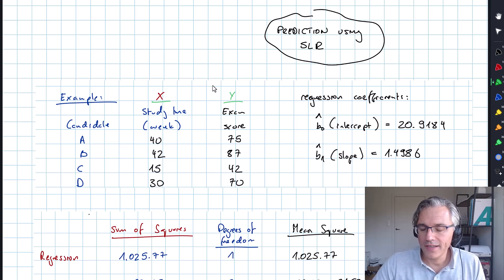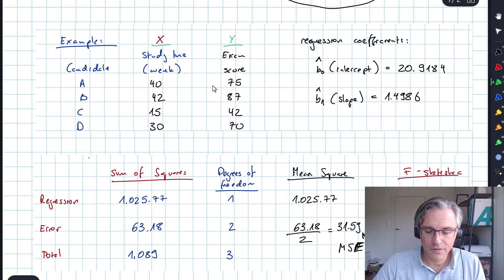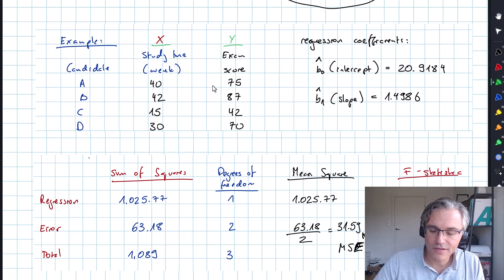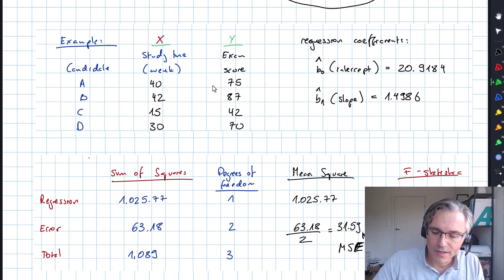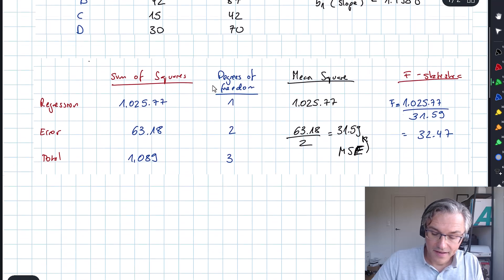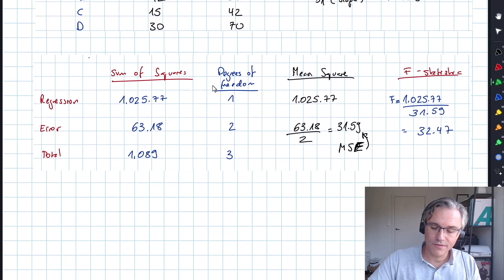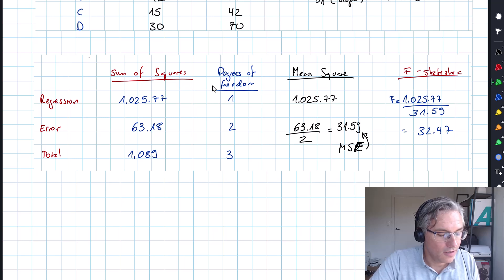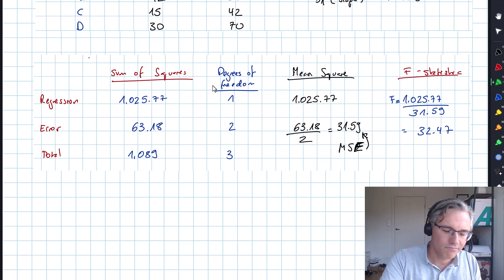When we run this data through the calculator we get the following regression coefficients, as you saw in previous videos: the intercept of 20.9184 and a slope of 1.4986. And in a previous video we also did an ANOVA table using data that was compiled over the last couple of recordings.